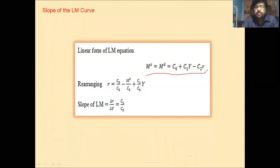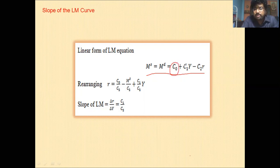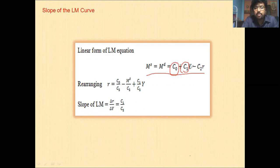Money market equilibrium states that the supply of money equals the demand for money. Supply of money is constant, and demand for money equals C0 plus C1·Y minus C2·r. Here C0 is the autonomous part, C1 is the sensitivity of money demand to income, and C2 is the sensitivity of money demand to the interest rate.